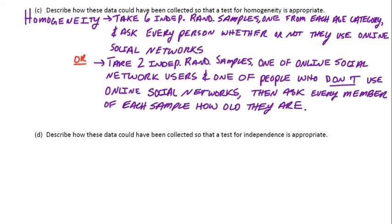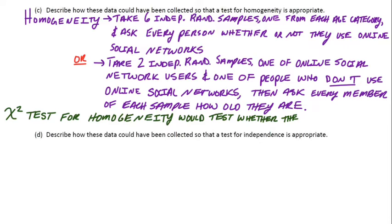The test would try to compare those six independent random samples to see if they were distributed the same. Or we could go the other way: take two independent random samples coming from the online social network users and another from people who don't use online social networks, then ask them their age. There are two different approaches for the homogeneity test. Remember, chi-squared tests for homogeneity test whether the distributions were the same or not.